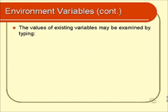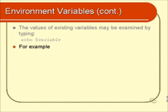If you want to find out the value of a given environment variable, you type the word echo, followed by a space, followed by a dollar sign, followed by the variable name. For example, if you wanted to see the contents of the variable called ps1, you type: echo $PS1.